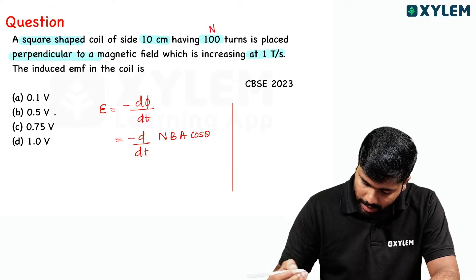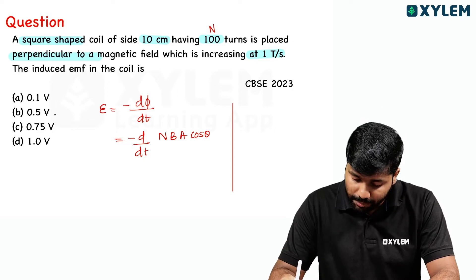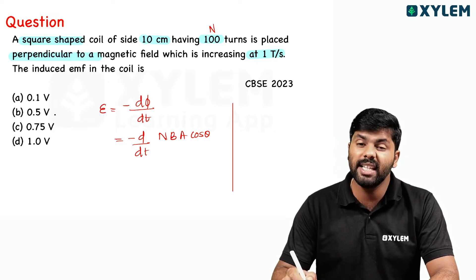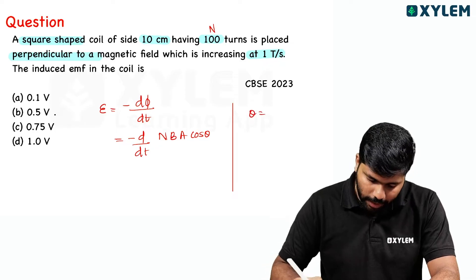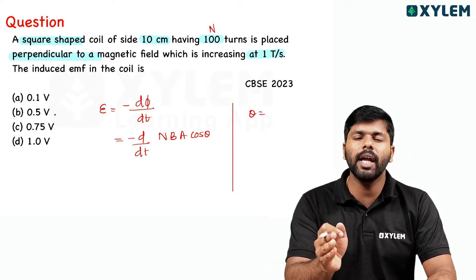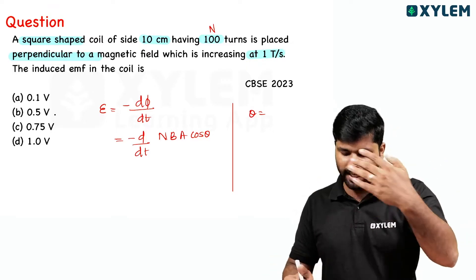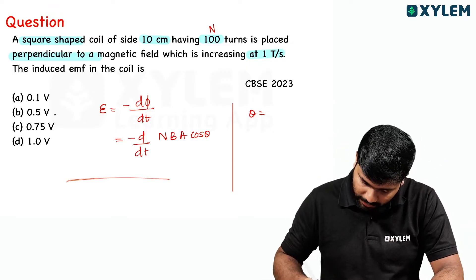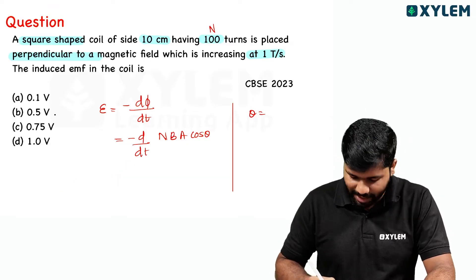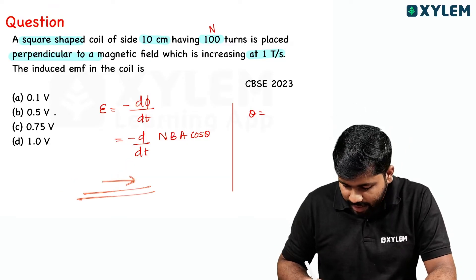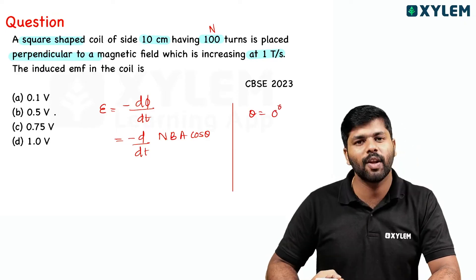N is 100. B is not given directly — dB/dt is given, dB/dt is 1 tesla per second. The coil is placed perpendicular to the magnetic field, which means the area vector is parallel to the magnetic field, so theta is equal to zero degree.